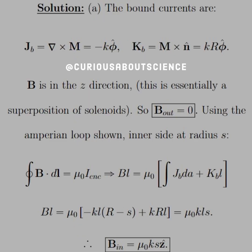Alright, so part A. The bound currents are JB, the volume, the curl of M, which yields negative K phi hat, and the surface, M cross n, which is KR phi hat. Again, you see the negative sign, so on the diagram, that's why JB flowed opposite of KB.